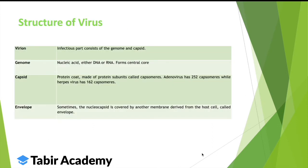Moving on to the structure of a virus. The first part, the infectious part, is the virion. This is the part that enters the host cell and then, using the host cell machinery, it can replicate. Within that, there is a genome and a capsid.